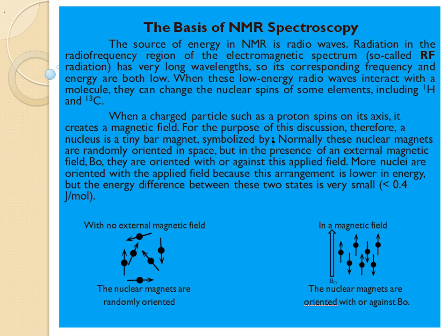For the purpose of this discussion, a nucleus is a tiny bar magnet, symbolized by the arrow symbol shown here. Hence, the nucleus can be thought of as a little tiny bar magnet.